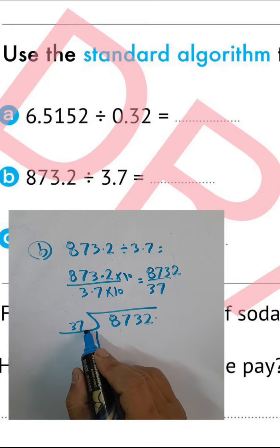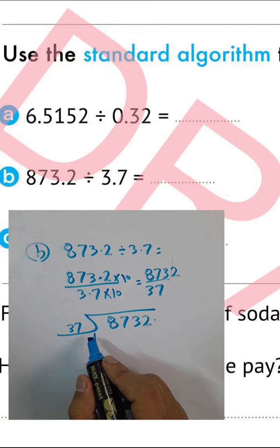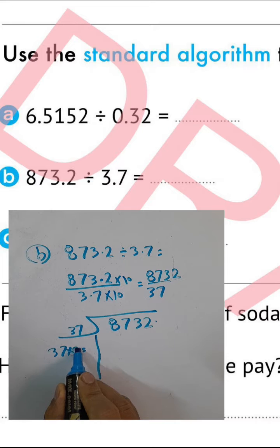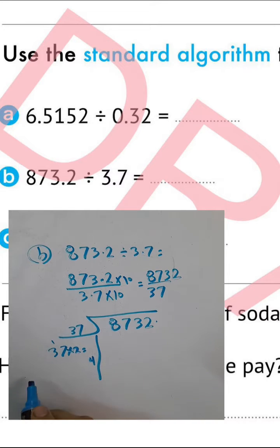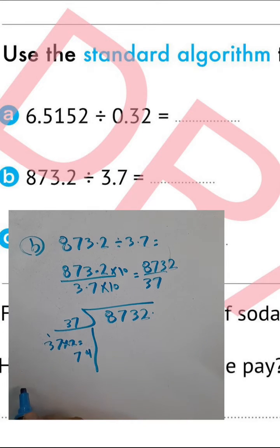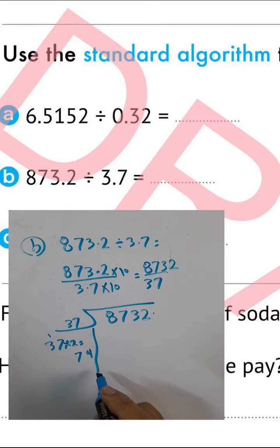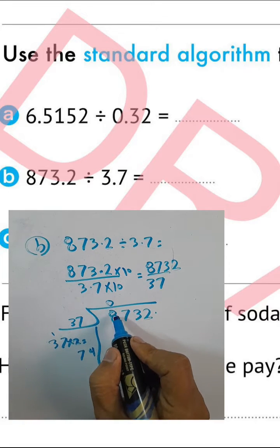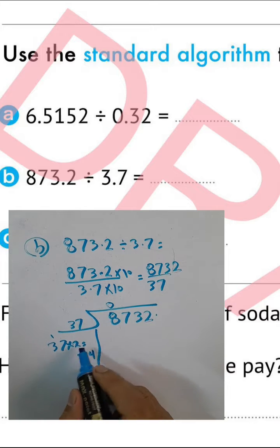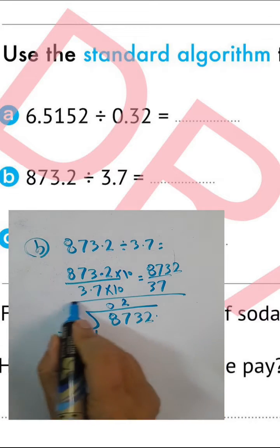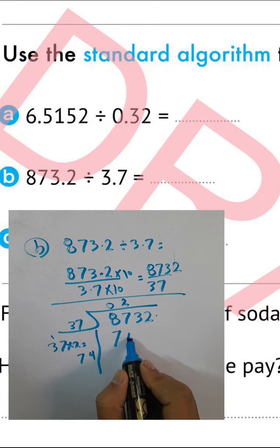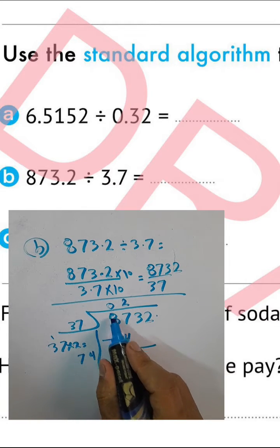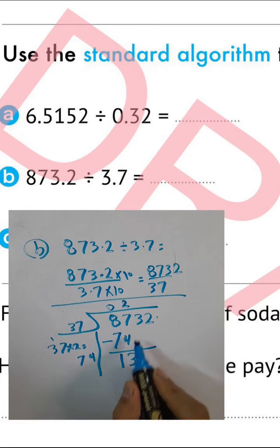8 divided by 37 — we can't do it, so write 0. 87 divided by 37 equals 2. 37 times 2: 2 times 7 equals 14, write 4 carry 1; 2 times 3 equals 6, plus 1 equals 7 — giving 74. Write 2 outside. 87 minus 74: 7 minus 4 equals 3, 8 minus 7 equals 1 — giving 13. Drop 3 here.